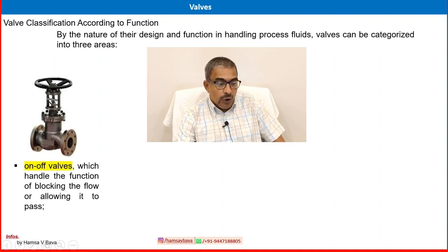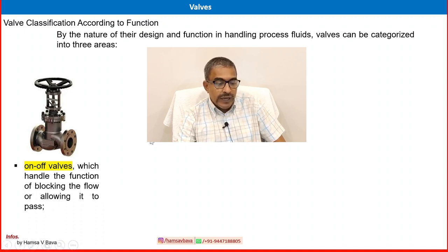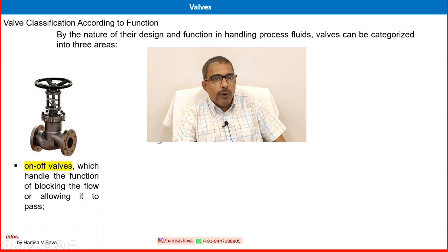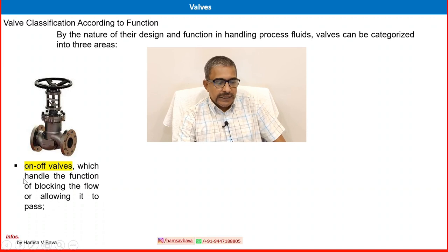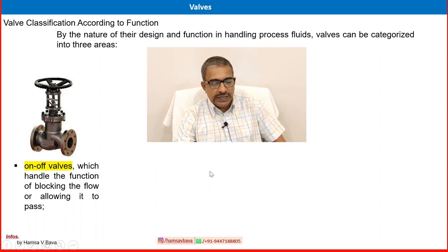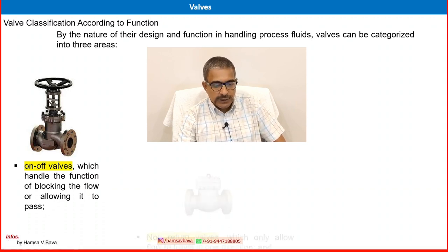Number one is the on-off valve, which handles the function of blocking the flow or allowing it to pass — either completely closed or completely open. Not partial open or partial close; that is what is called on-off. You can close completely — full isolation. That is type-1 valves.